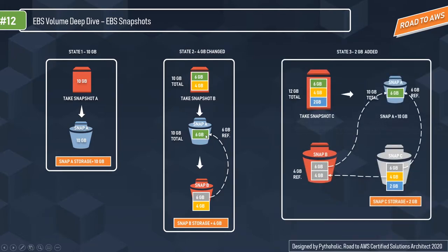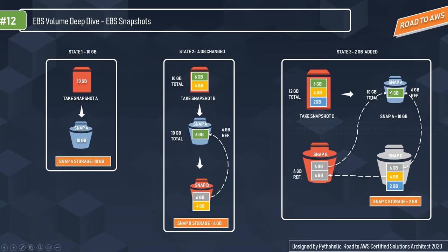Moving to a more complex scenario — State 3 — where we have added 2 GB of extra volume. When we create Snap C, the 2 GB that was added is captured in Snap C. To replicate the 4 GB it just references Snap B, and Snap B already references Snap A for the 6 GB. We have created three snapshots without duplicating any data — that's how intelligently AWS has designed EBS block storage snapshots.